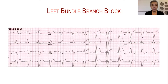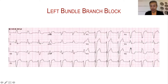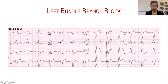Here is a patient with wide QRS. You see a small R and a wide and deep S. This is left bundle branch block, and if you verify it, there is broadening and notching of the R waves in V5 and V6, lead I, and AVL as well.